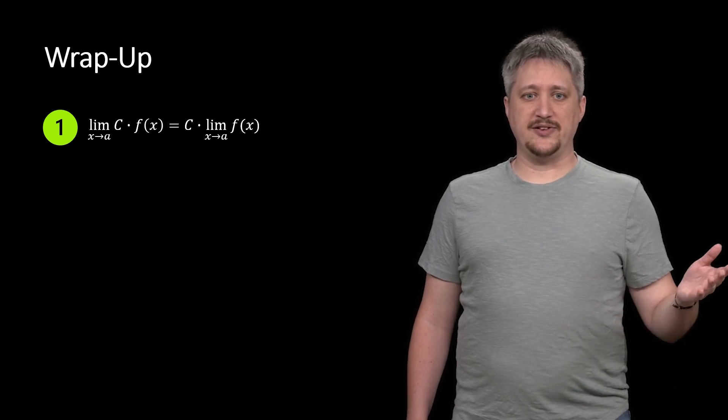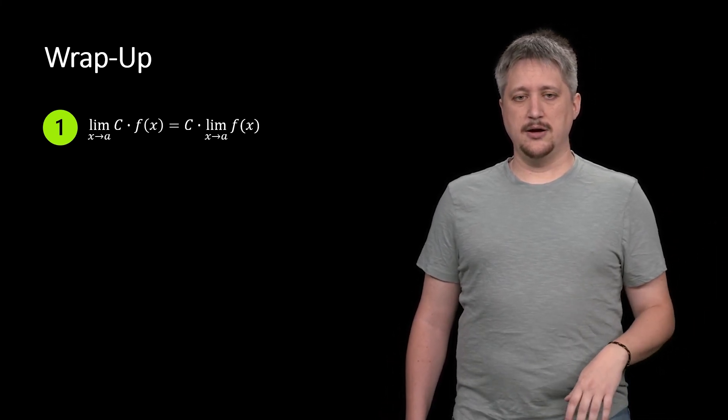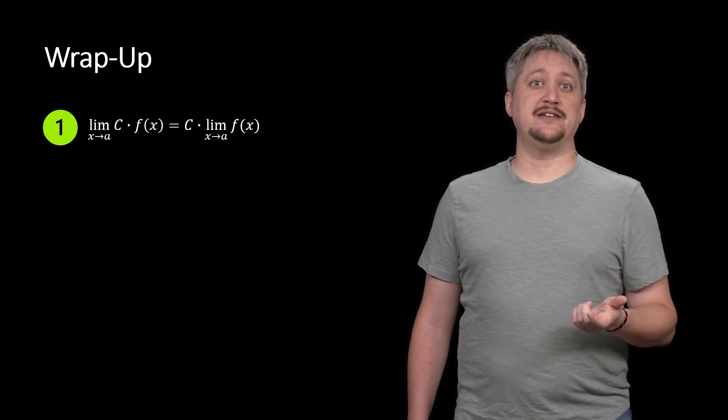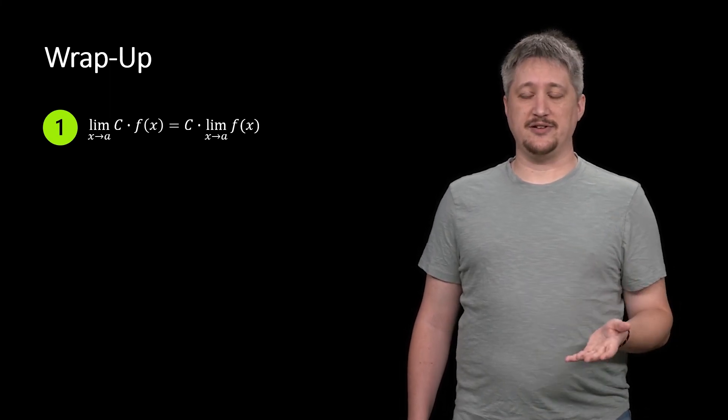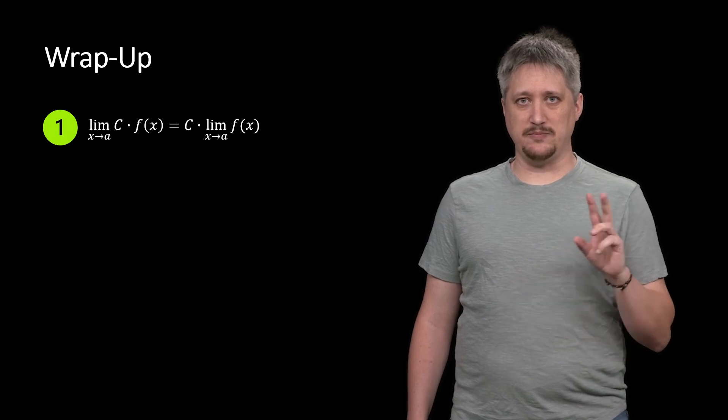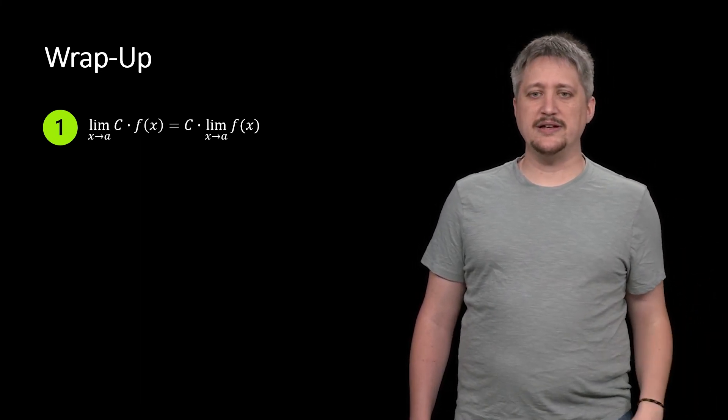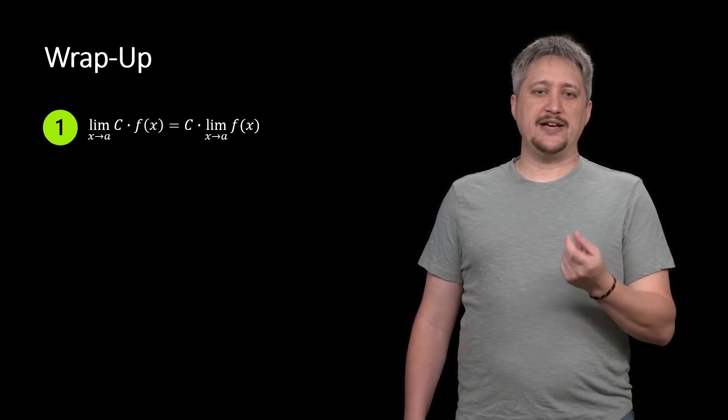First rule we tackled was the constant multiple rule. That's saying if you have some constant, typically a number like 5, 17, pi, or if it doesn't depend on whatever the limit is with respect to—meaning if it doesn't have to do with x—that would be viewed as a constant. What I mean by that is something we will talk about later. For now you can just think of nice numbers.